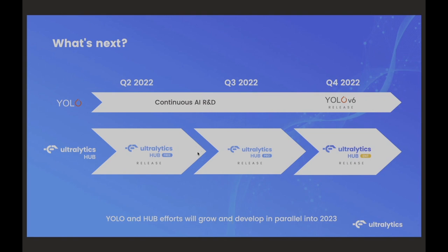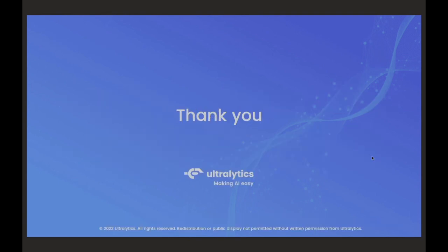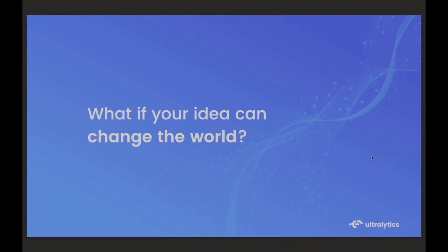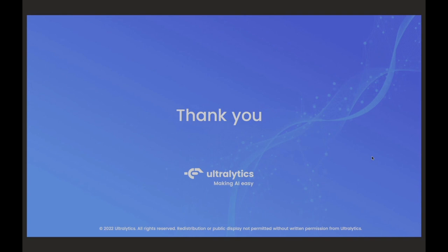We've essentially got two products — YOLO, which is continuous AI R&D forever, and Ultralytics Hub. For Hub, we have a free version in beta launching in September, a pro version with extra features at a small monthly price point, and an enterprise solution for big companies like Procter and Gamble launching at the end of the year. I'd like to leave you with this idea — everyone here should think about what potential they have to improve the lives of the people around them. If we all think like this and put our minds together, I think we can accomplish a lot.